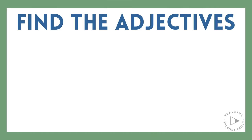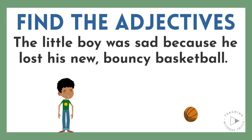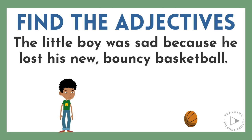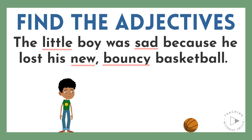Now, can you find the adjectives in the following sentence? The little boy was sad because he lost his new bouncy basketball. Here's a hint — there are four adjectives in this sentence. Pause here to think, or keep watching to hear the answer. Little and sad are adjectives that describe the boy. New and bouncy are adjectives that describe the basketball.